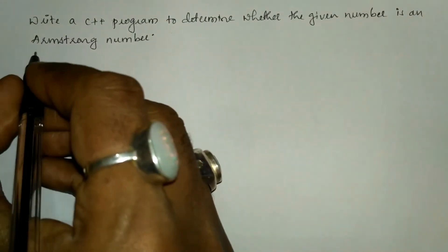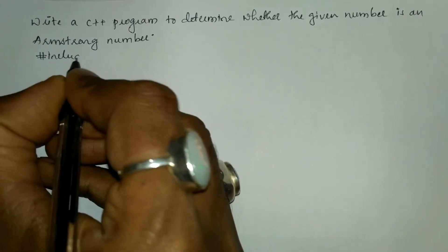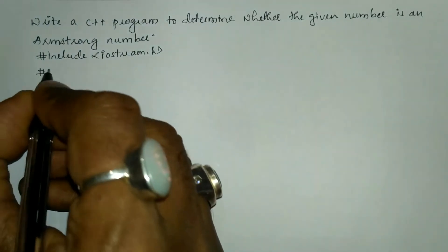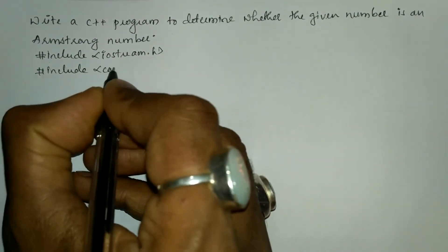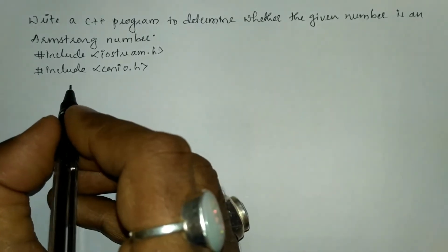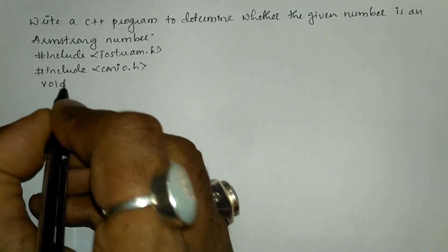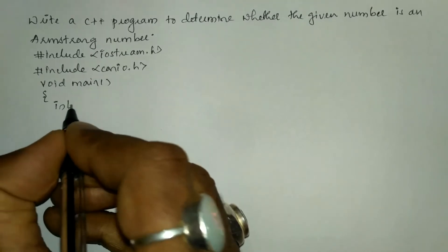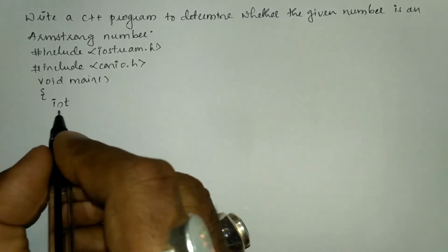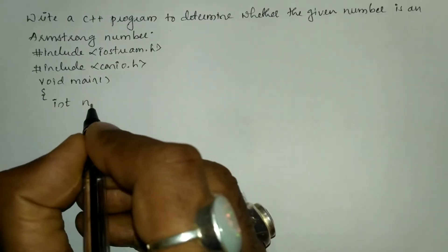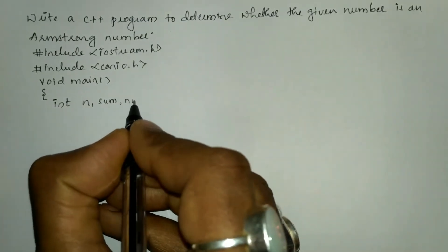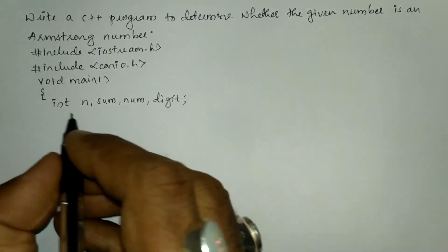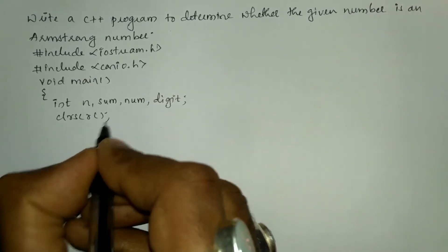Now let us write the preprocessor directives: hash include in angular brackets, we write iostream.h header file, and the next preprocessor directive hash include in angular brackets, we write conio.h header file. Now we write the main function with a curly open brace and declare all the necessary variables to be used in the program.